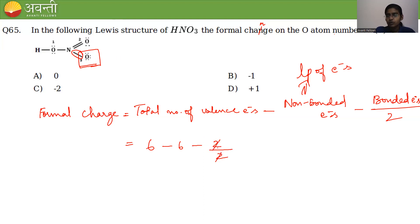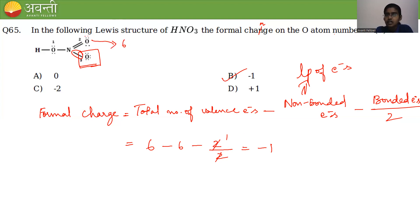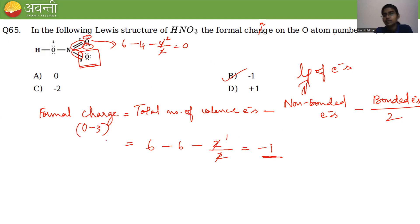So the formal charge of oxygen number 3 is −1, and option B is the correct answer. For oxygen number 2 (which has 2 lone pairs and forms 2 bonds): 6 − 4 − 4/2 = 6 − 4 − 2 = 0. Formal charge of oxygen 2 is 0.